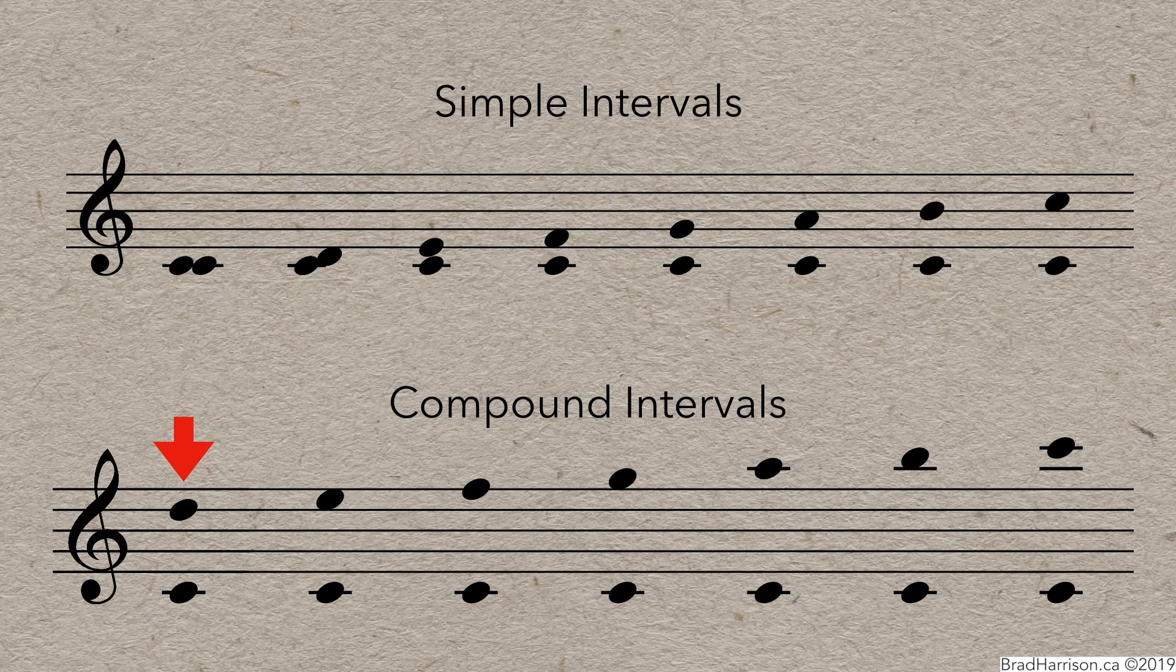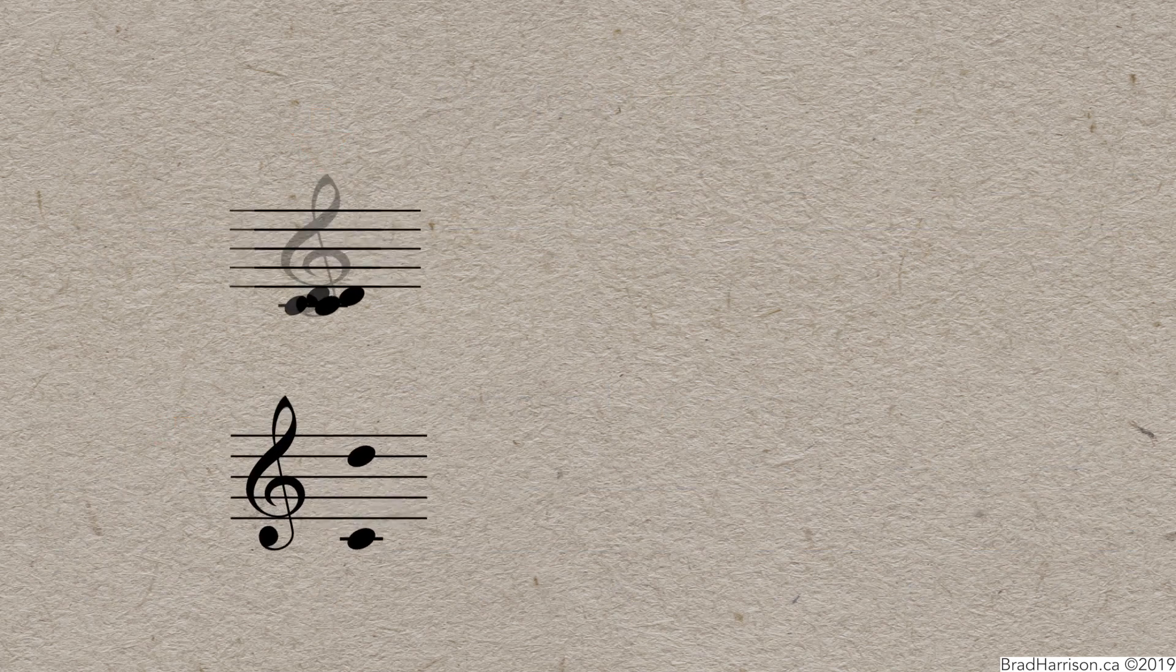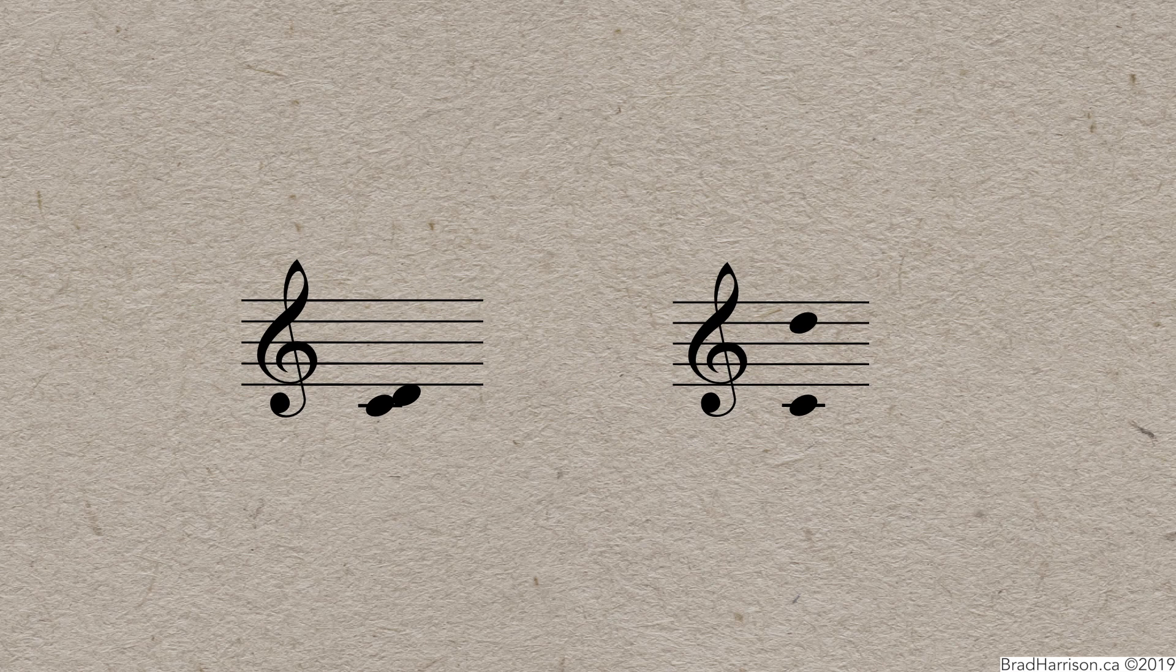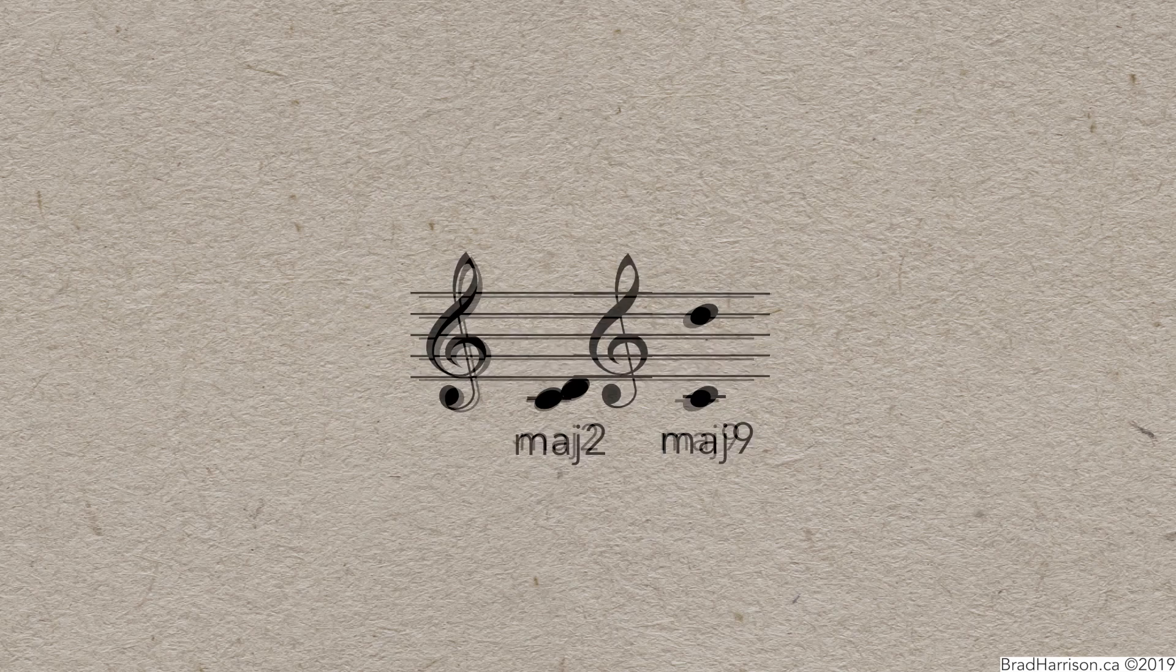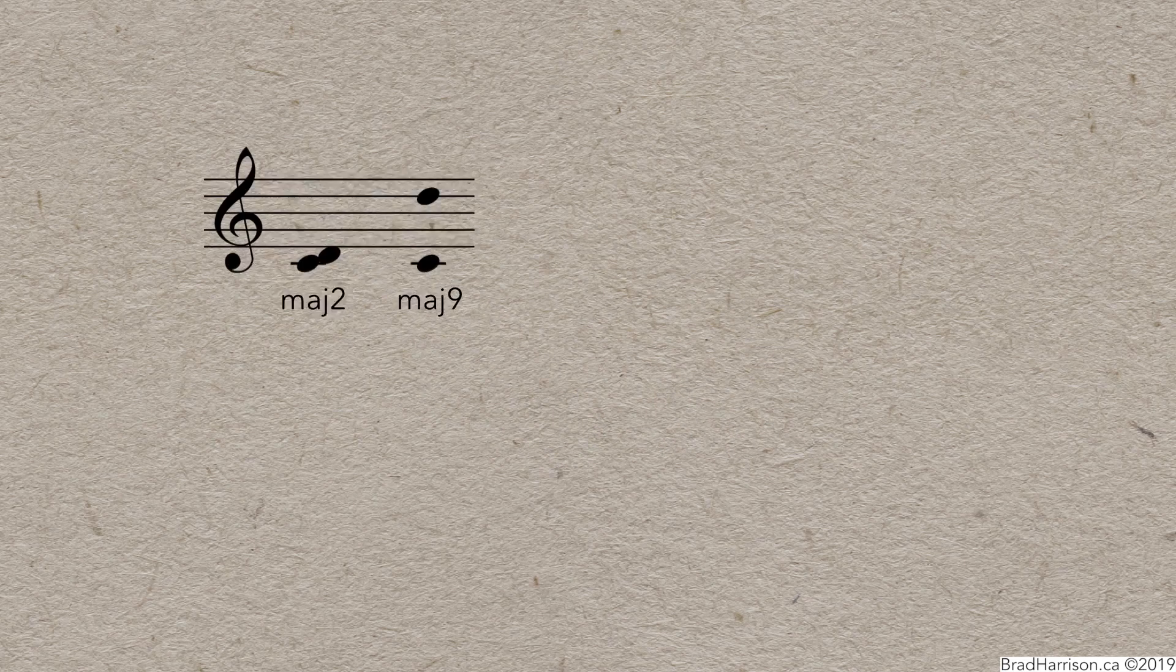Consider the 9th. It's very similar to a 2nd because both intervals use the same notes. In this case, a C and a D. The only difference is the low D in the 2nd and a high D in the 9th. And, just like the 2nd, we call the 9th major.